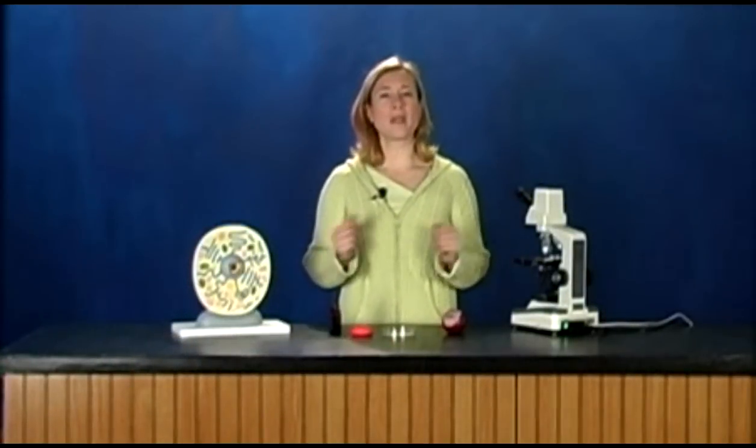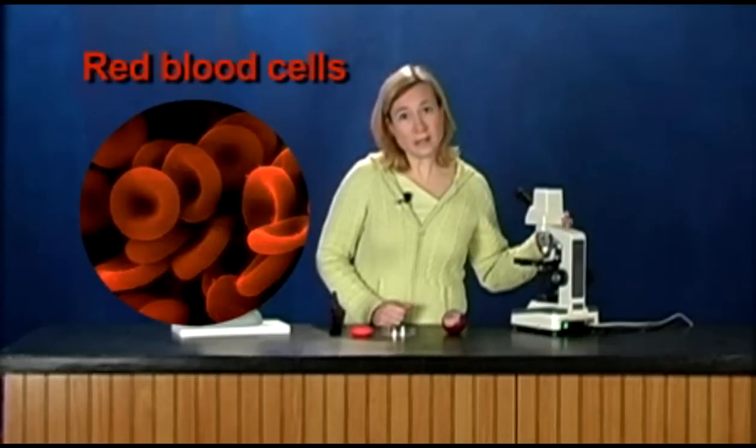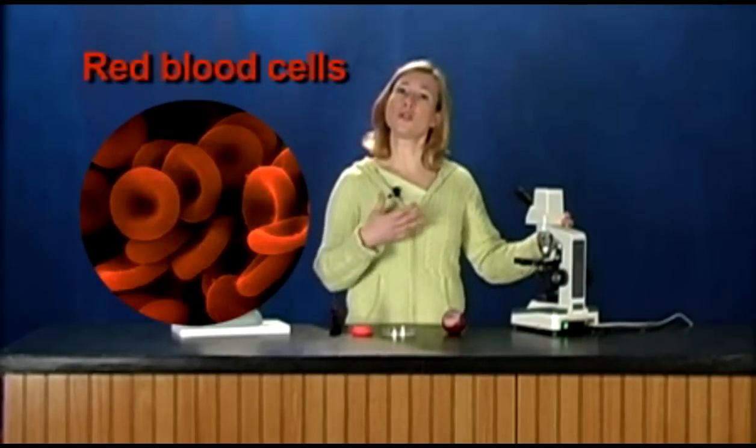Cells are very small. How small are they? Well, a red blood cell is one kind of cell in your body. Under the microscope, you can see the red blood cells are these circular objects.